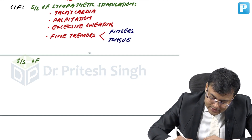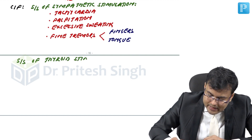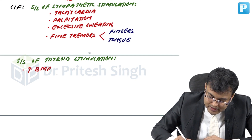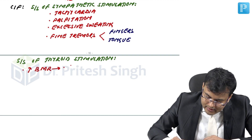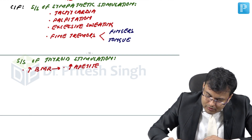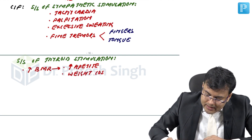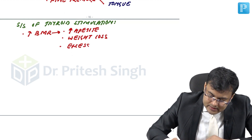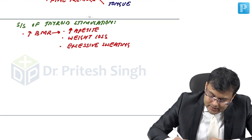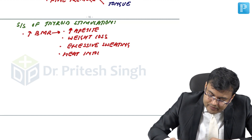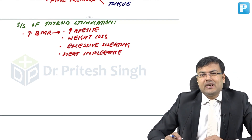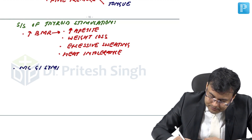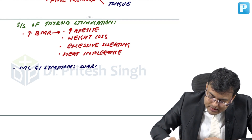Signs and symptoms of thyroid stimulation: there is increased basal metabolic rate leading to increased appetite but weight loss, excessive sweating, and heat intolerance. The most common GI symptom of hyperthyroidism — a frequently asked question — is diarrhea.